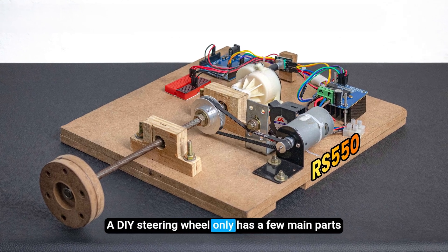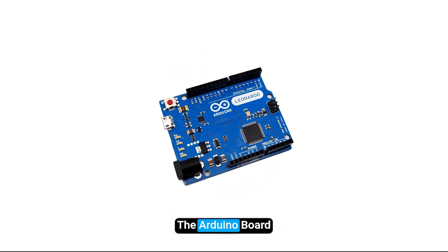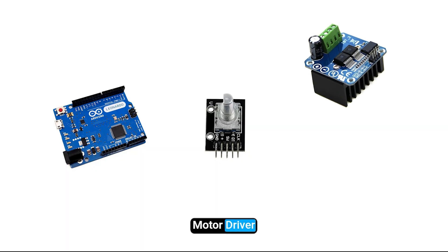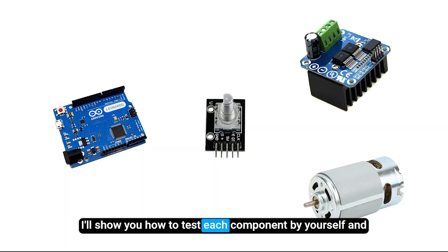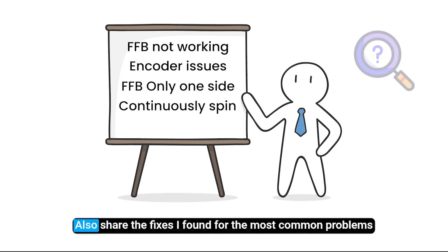A DIY steering wheel only has a few main parts: the Arduino board, encoder, motor driver, and motor. So in this video, I'll show you how to test each component by yourself and also share the fixes I found for the most common problems.